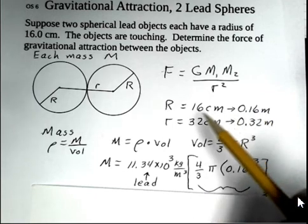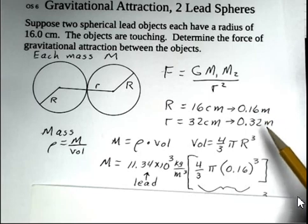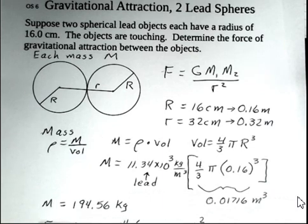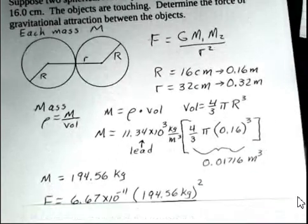Again, the radius of one sphere is 0.16. The distance from center to center is 0.32 meters. We can calculate that initial volume. You ought to pause your playback here and do this calculation. I came up with 194.56 kilograms. That's still pretty substantial, 194.56 kilograms.